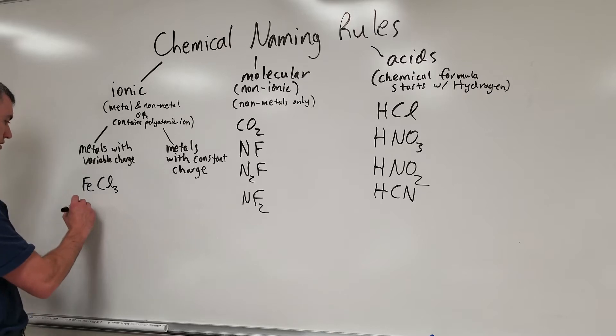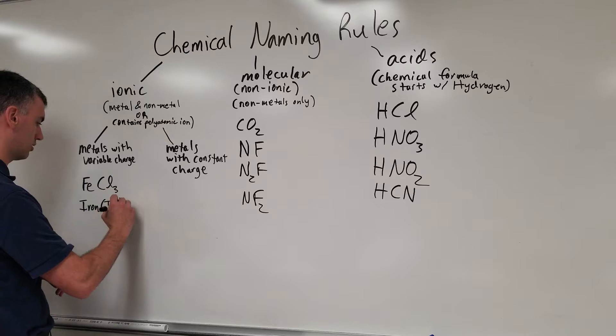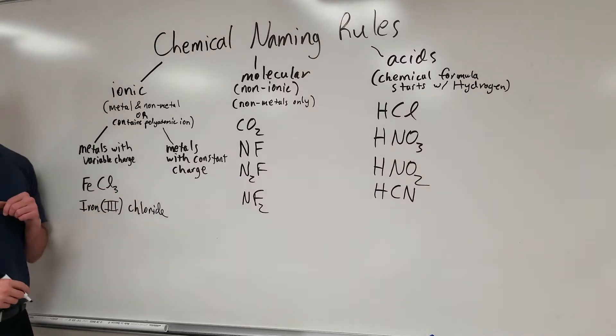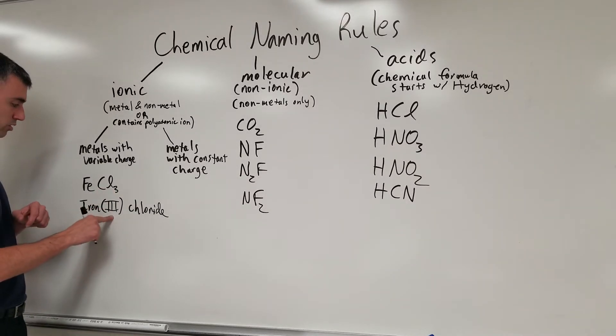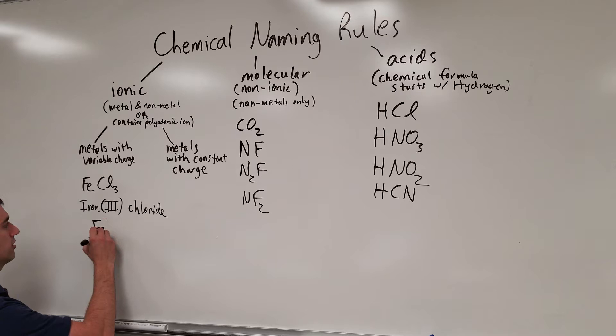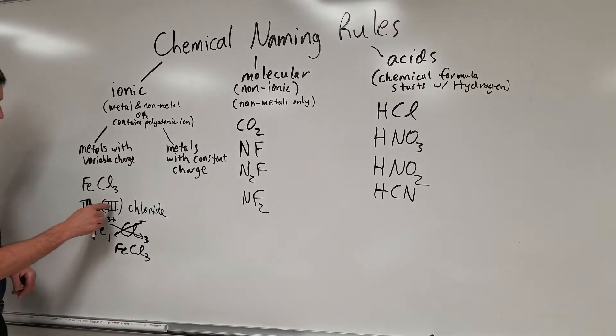What you have to do is figure out what the charge of the iron is and then add a Roman numeral. This would actually be iron three chloride. What does the Roman numeral represent? It does not represent this three. The Roman numeral three says iron with the charge of plus three and chlorine. If I saw this, what I would do is iron three plus charge, chlorine, look it up on the periodic table, it's a minus one.